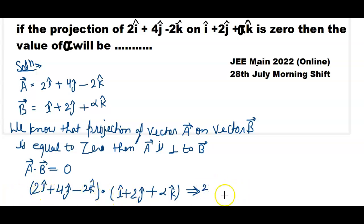Plus times plus, then plus 4 times 2 equals 8. Minus times plus equals minus. 2 times alpha, I got 2 alpha equals 0. So 8 plus 2 equals 10, so 10 minus 2 alpha equals 0.